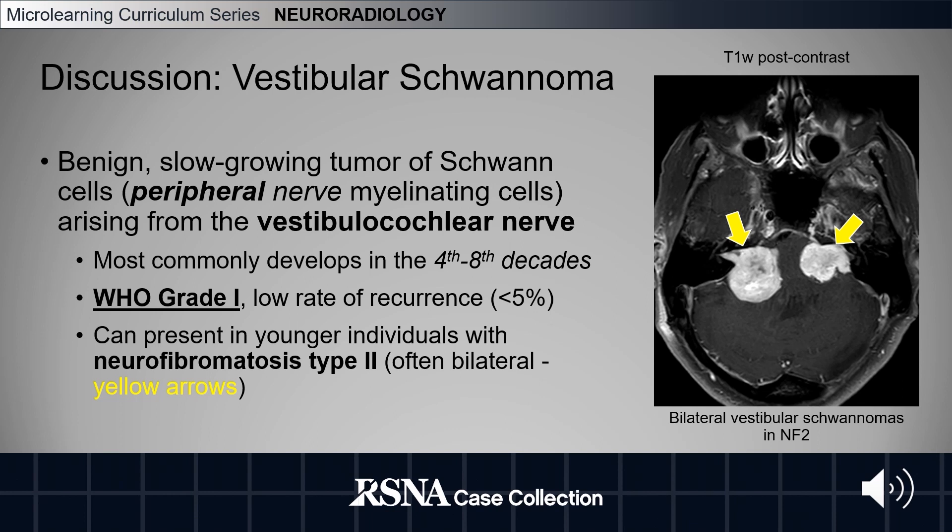Vestibular schwannomas can present in younger individuals with neurofibromatosis type 2, and here they are often bilateral.